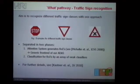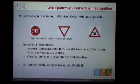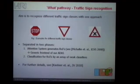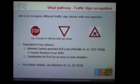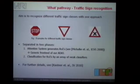The next part is a short introduction about the WHAT pathway. The idea is that we have some kind of generic front end, which is the attention system. Therefore we are able to search for a number of classes within the environment and are able to detect objects. Then we either use generic methods to detect cars or other things, or we use specific methods for the classification of traffic signs.